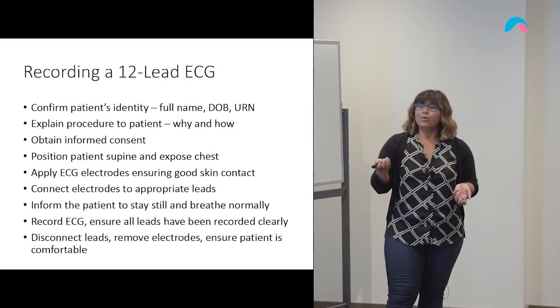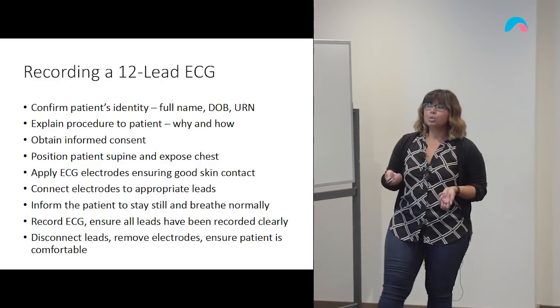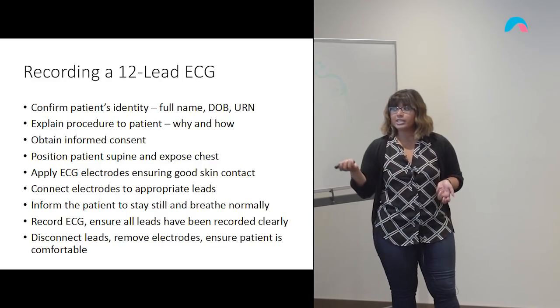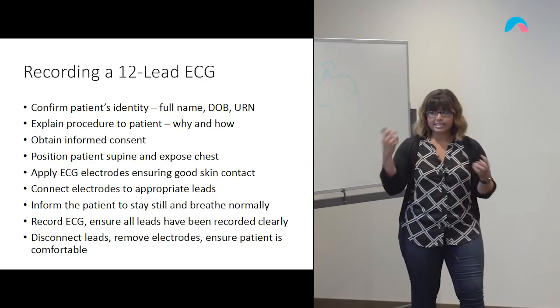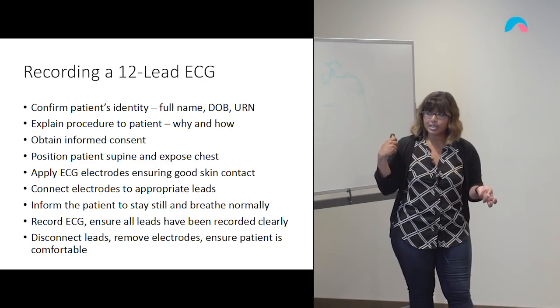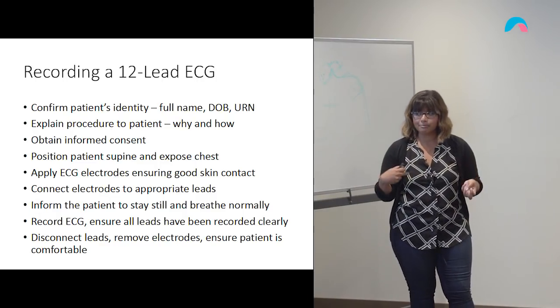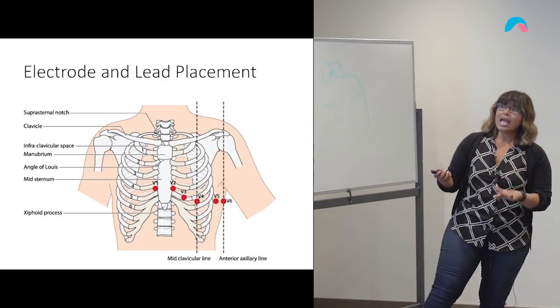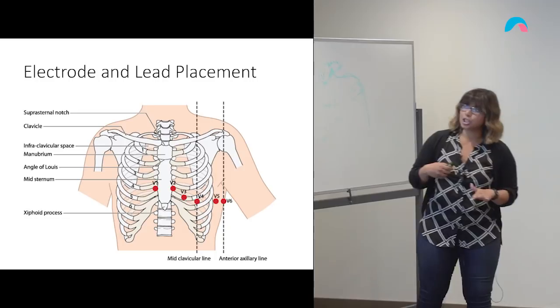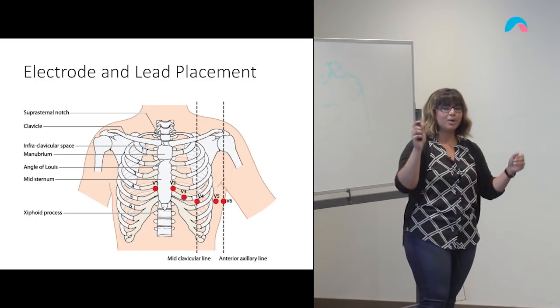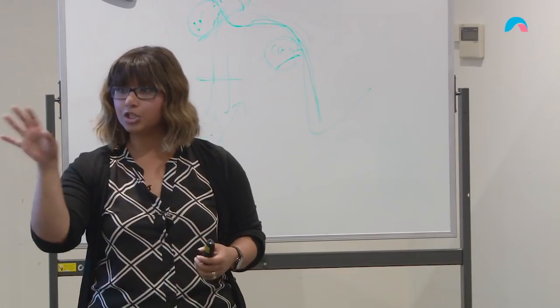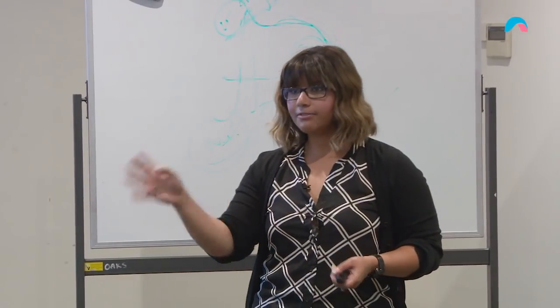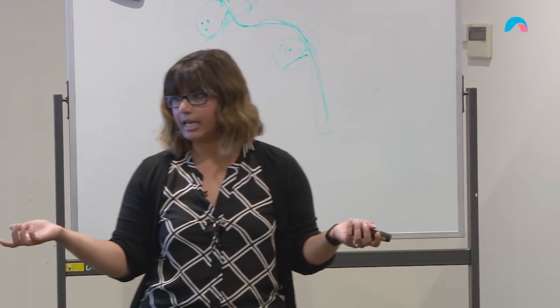So then we record the ECG and we ensure that all the leads have been recorded clearly. And then we disconnect your ECG, remove your ECG electrodes and ensure that the patient is comfortable prior to leaving the room. So when we talk about where we connect these ECG dots to, where do we start? So if you were walking in doing an ECG, where's the first spot that you will generally start on?